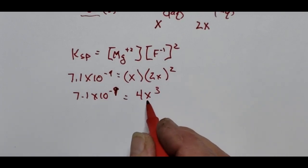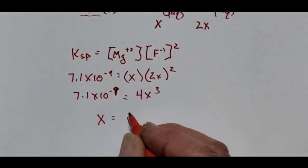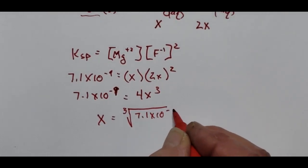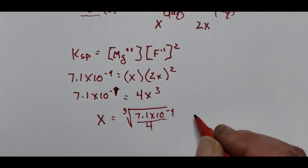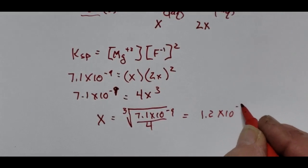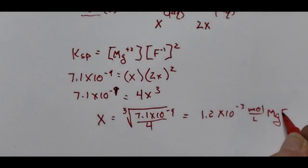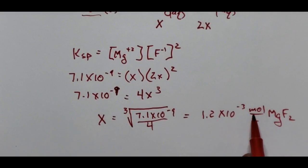Solving for x: x equals the cube root of (7.1 × 10⁻⁹ divided by 4). x turns out to be 1.2 × 10⁻³ moles per liter of magnesium fluoride. If they had simply asked for the molar solubility, we'd be done — this is moles per liter.